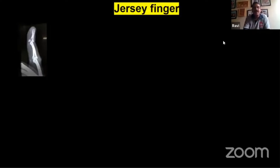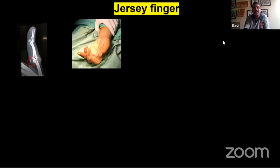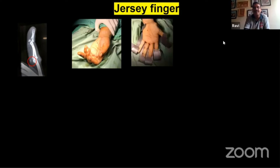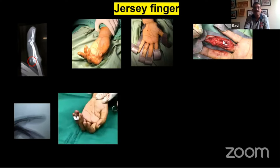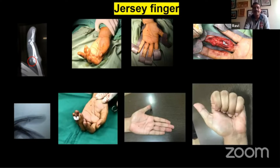For jersey finger, you often have to take into account how far the tendon has retracted into the palm, which is often clinically visible as loss of the finger cascade. The ring finger is most commonly involved. This requires an open approach, fishing of the tendon, and reattaching it usually to a suture anchor or pullout suture, yielding a good result.